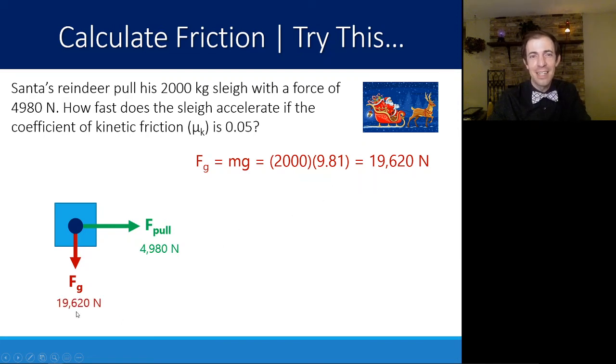We know that this sleigh in this case is just going to be pulled horizontally. So that means there's no net force going up or going down. These verticals have to cancel each other out. So R has to be equal and opposite to Fg, which again is 19,620.